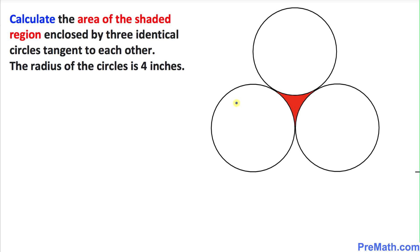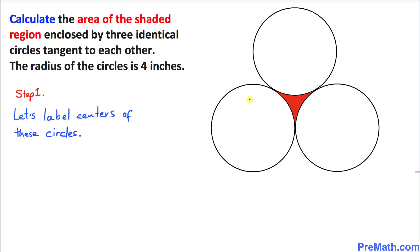Welcome to Pre-Math. In this video tutorial we are going to calculate the area of this red shaded region enclosed by three identical circles that are tangent to each other. The radius of each circle is four inches.